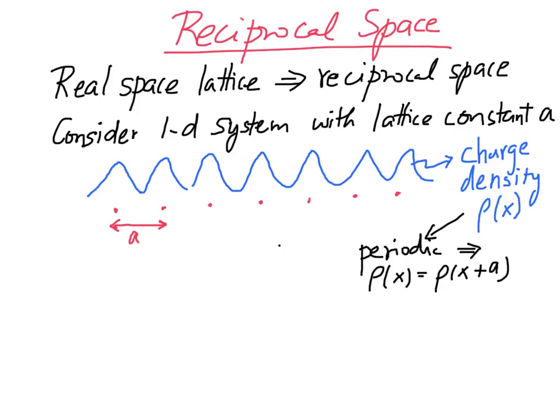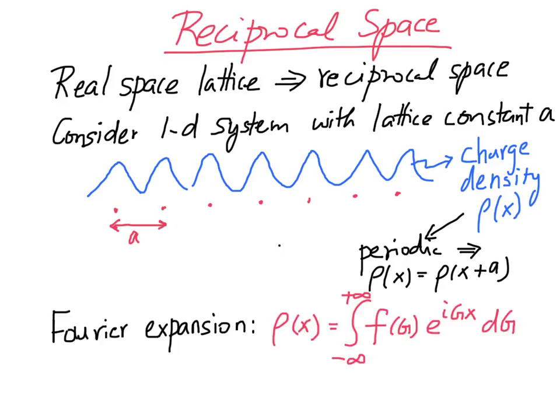Next, let's write down the Fourier expansion of the charge density. So, this expression is true for any function ρ(x), periodic or not. G here is a reciprocal space quantity. The integral is over all values of G, and the function f(G) is really the Fourier space representation of the charge density ρ(x). So, ρ(x) is a real space quantity. f(G) is a reciprocal space or a Fourier space quantity.